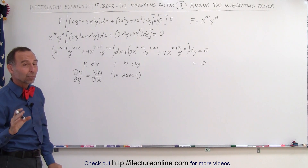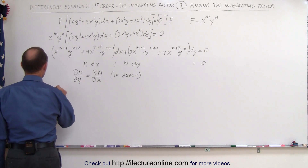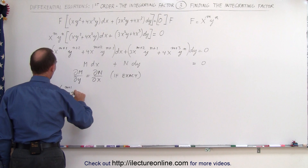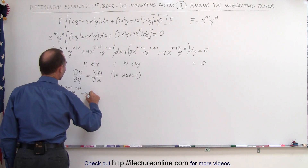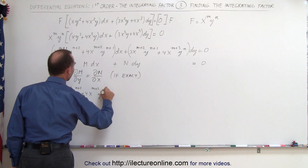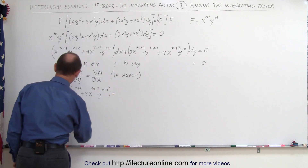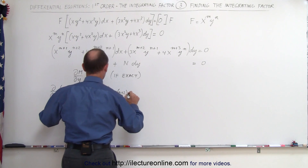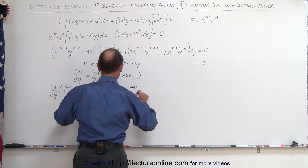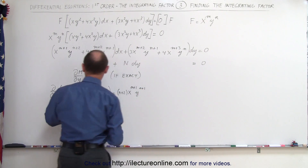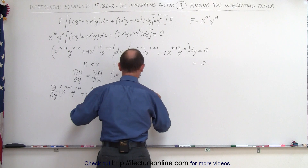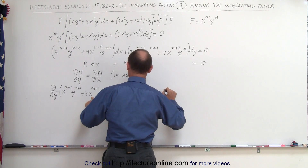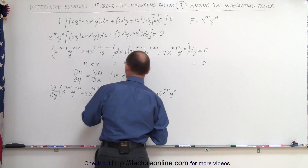From the previous video we already know the integrating factor was y/x, but we have to derive that. So we take the partial with respect to y of the first quantity: x^(m+1) * y^(n+2) + 4x^(m+2) * y^(n+1). When we take the partial with respect to y, x becomes a constant, so we get (n+2) * x^(m+1) * y^(n+1) plus 4(n+1) * x^(m+2) * y^n.